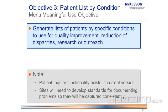Next thing: patient list by condition. This is something that you can do in the system right now with the patient inquiry. What is required for this is to generate lists of patients by specific conditions to use for quality improvement, reduction, or disparities, research, or outreach.